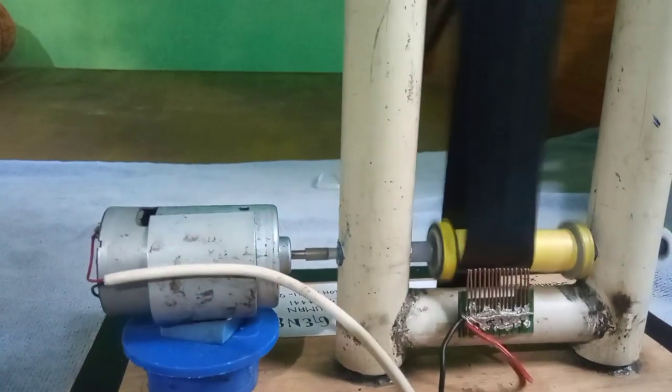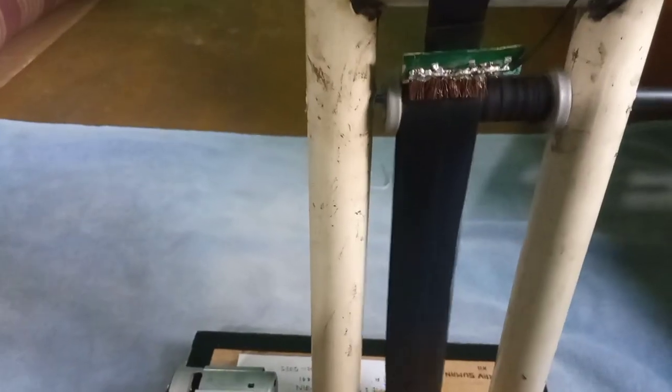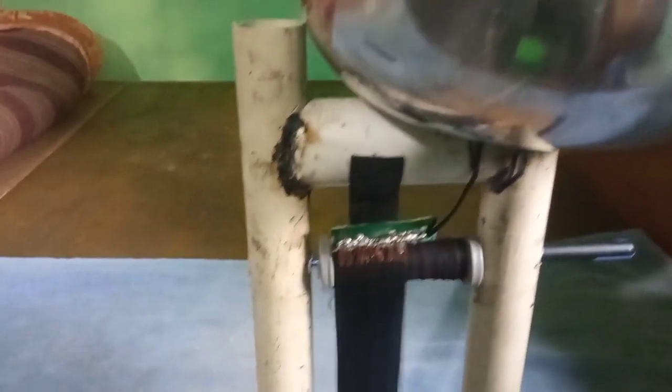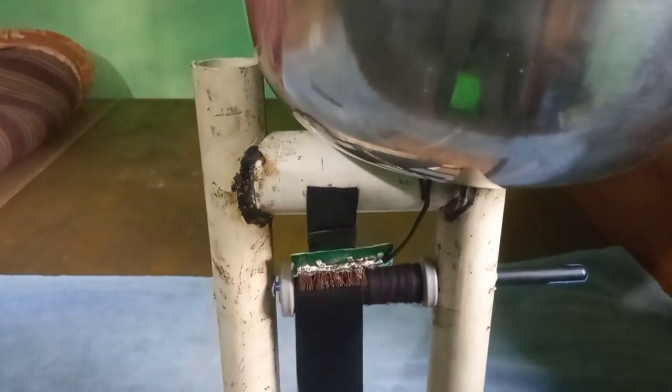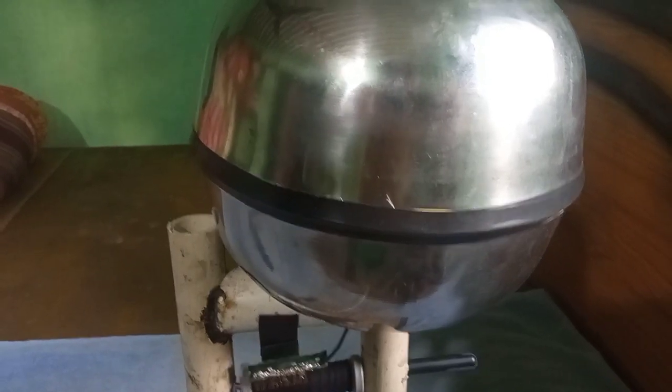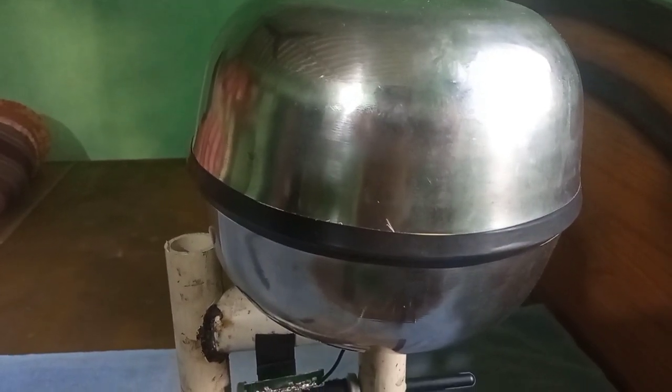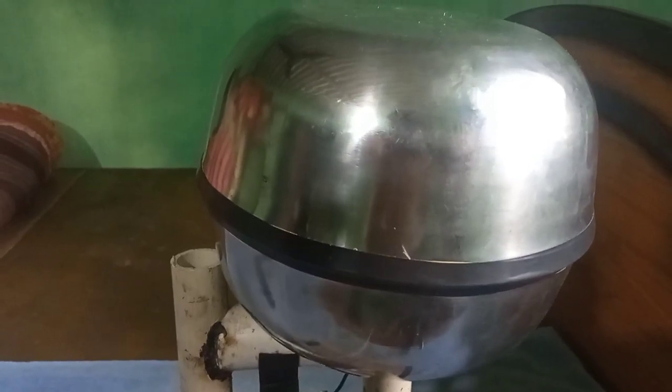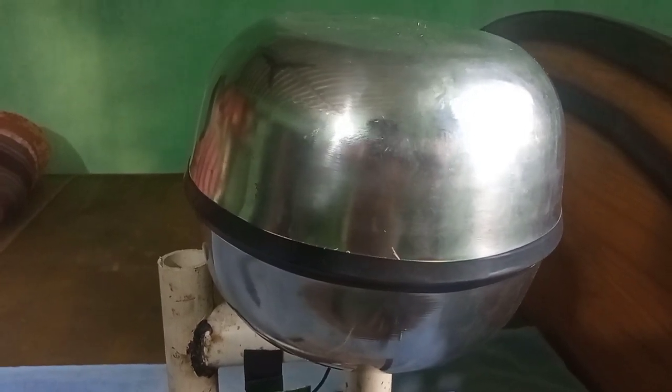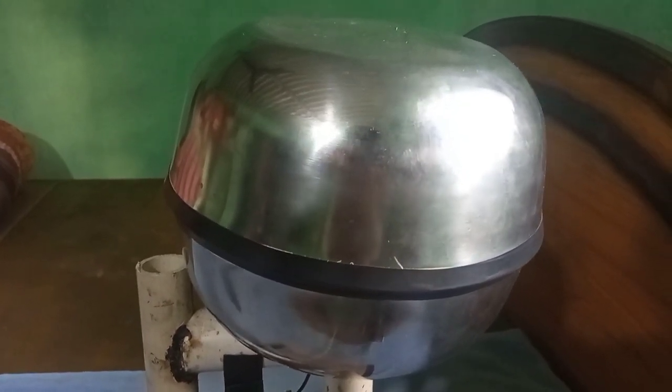The belt takes the charges all the way down to up. The upper spikes take these charges to the inner small metal tip. As the small metal tip has higher potential as compared to the shell surface, the charge gets transferred to the shell surface, making it charged.